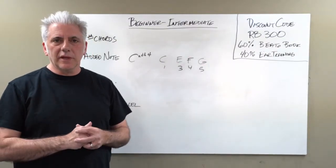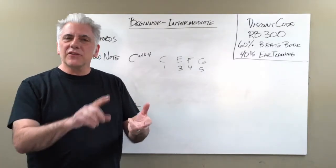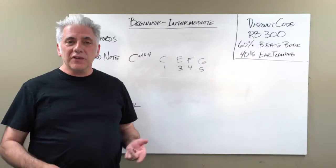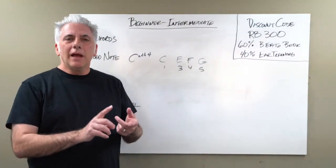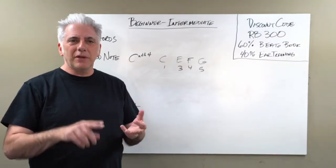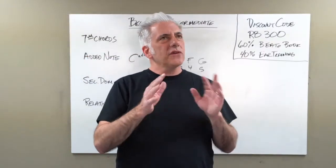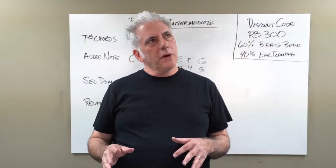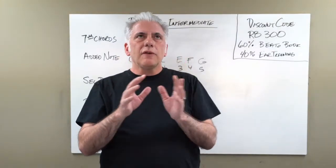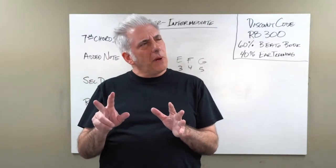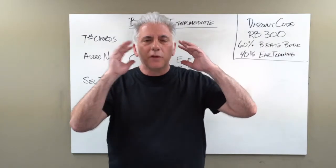For example, 'All the Things You Are': F minor 7, B flat minor 7, E flat 7, A flat major 7, D flat major 7 - that's a 2-5-1 in A flat - then D minor 7, G7, C major 7 is a 2-5-1 in C. Then C minor 7, F minor 7, B flat 7, E flat major 7, A flat major 7 is 6-2-5-1-4 in E flat. This is how you memorize things and identify chord progressions by ear.